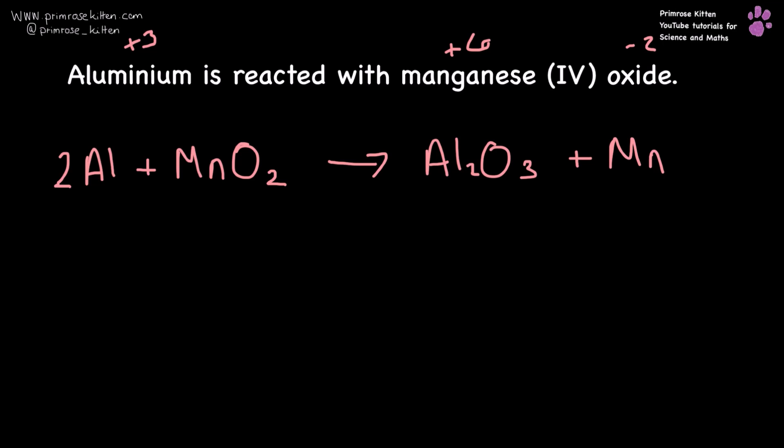I've got three oxygens and I don't like that, so I'm going to put a two in front of Al2O3, which means I'm going to put a three in front of the MnO2, which means I need to change the aluminium to four, and then put a three in front of the manganese. If I'm balancing these equations too quickly for you, this is basically how quickly you need to be able to balance them yourselves. Go and check out my videos on balancing equations where I do loads and loads of these.